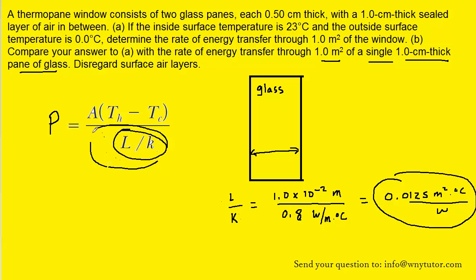With all the other known values, remember the area was one meter squared and the temperatures were also the same, 23 degrees Celsius and 0 degrees Celsius, we can plug in. And then when we simplify that on our calculator, we should get approximately 1,840 watts.